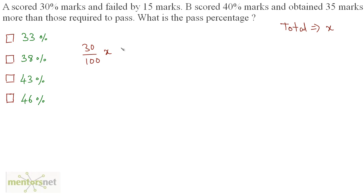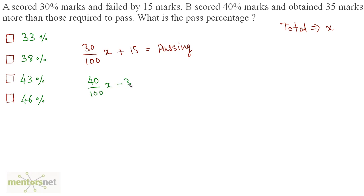So 30 upon 100 times x — A failed by 15 marks, so plus 15 is equal to the passing marks. 30% of total marks plus the marks by which A failed equals the passing marks. In case of B, B scored 40% marks and obtained 35 marks more than those required to pass. So 40% of x minus 35 gives the passing marks. Since both expressions equal passing marks, I can equate these equations.